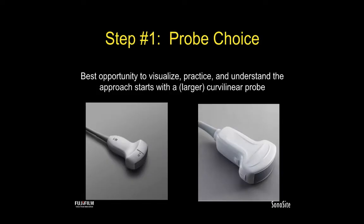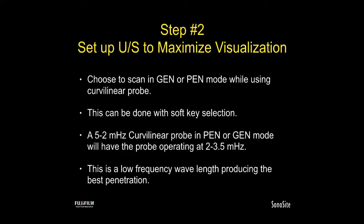The first step for neuraxial scanning techniques with ultrasound is probe choice. The best opportunity to visualize and practice this approach starts with a curvilinear probe. Probe choices for ultrasound and regional techniques generally revolve around either linear probes or curvilinear probes. The second step is to maximize the visualization — you'd want to choose general or penetration mode while using the curvilinear probe. A 5 to 2 megahertz curvilinear probe in penetration or general mode will operate at somewhere between 2 to 3.5 megahertz, a low frequency wavelength that produces the best penetration and the best opportunity to visualize the technique for neuraxial scanning.